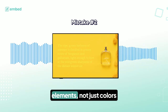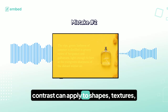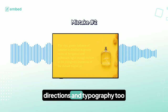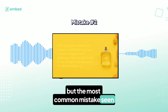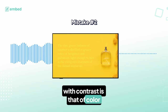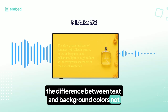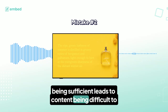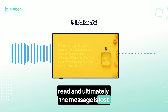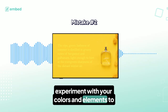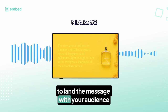Contrast is the difference between elements, not just colours. Contrast can apply to shapes, textures, directions, and typography too. But the most common mistake seen with contrast is that of colour. The difference between text and background colours not being sufficient leads to content being difficult to read and ultimately the message is lost. Experiment with your colours and elements to ensure there is enough difference between them to land the message with your audience.